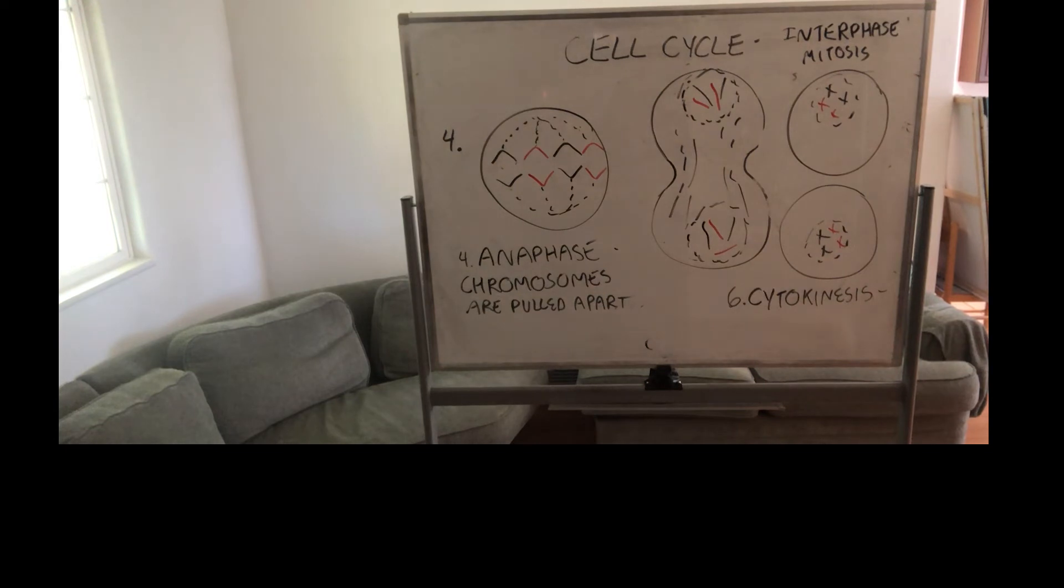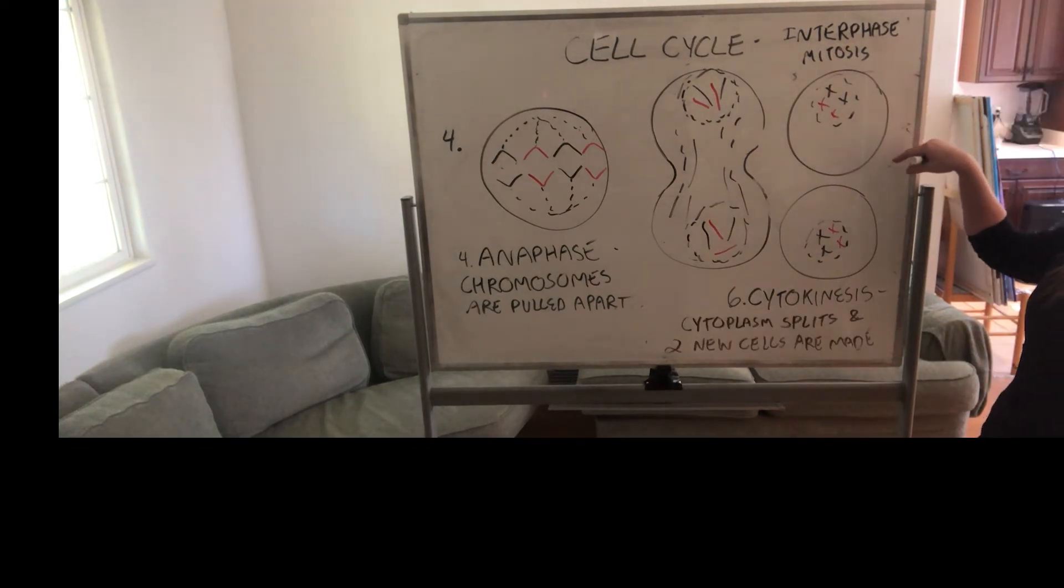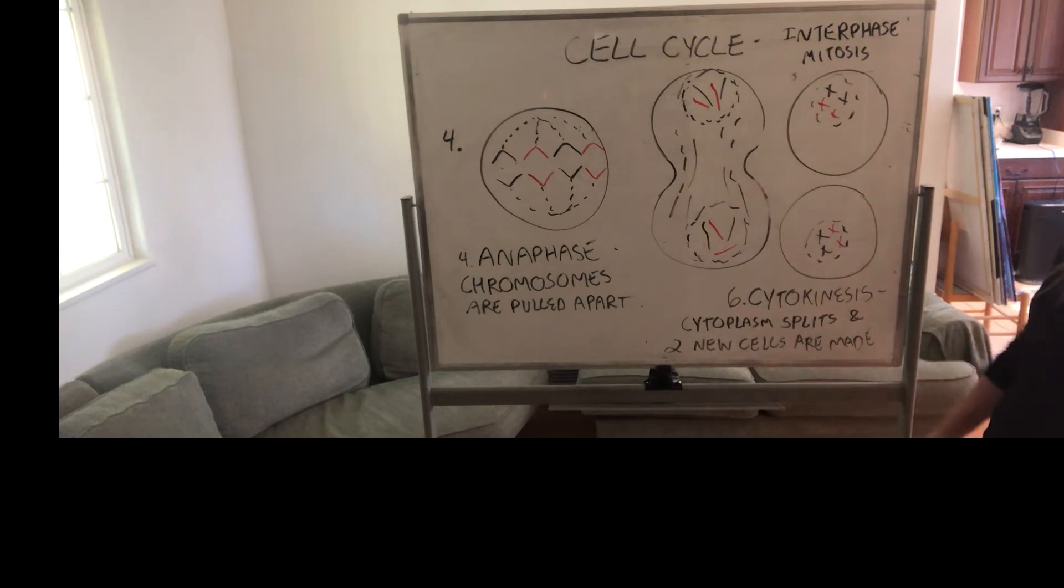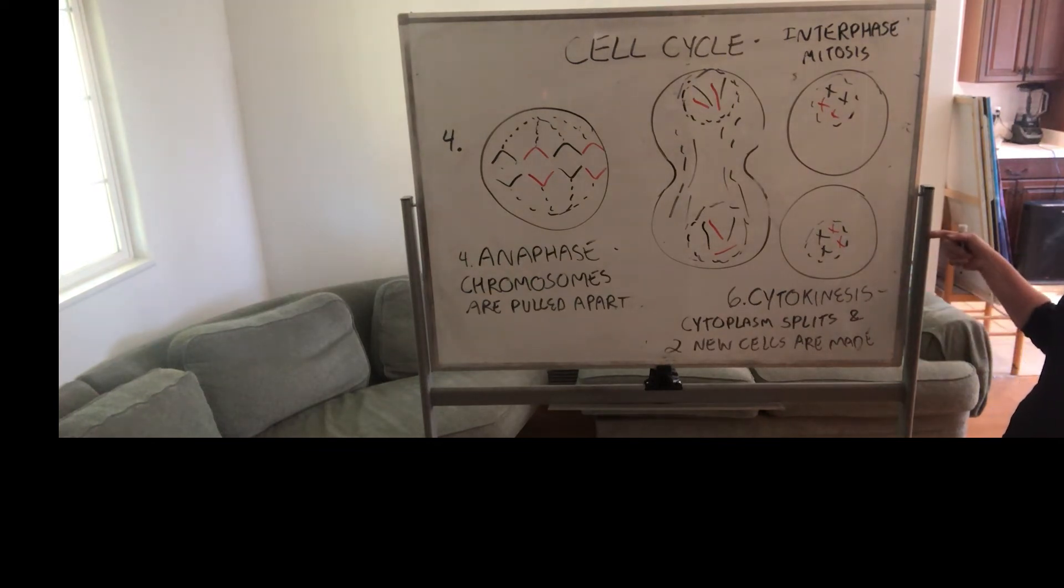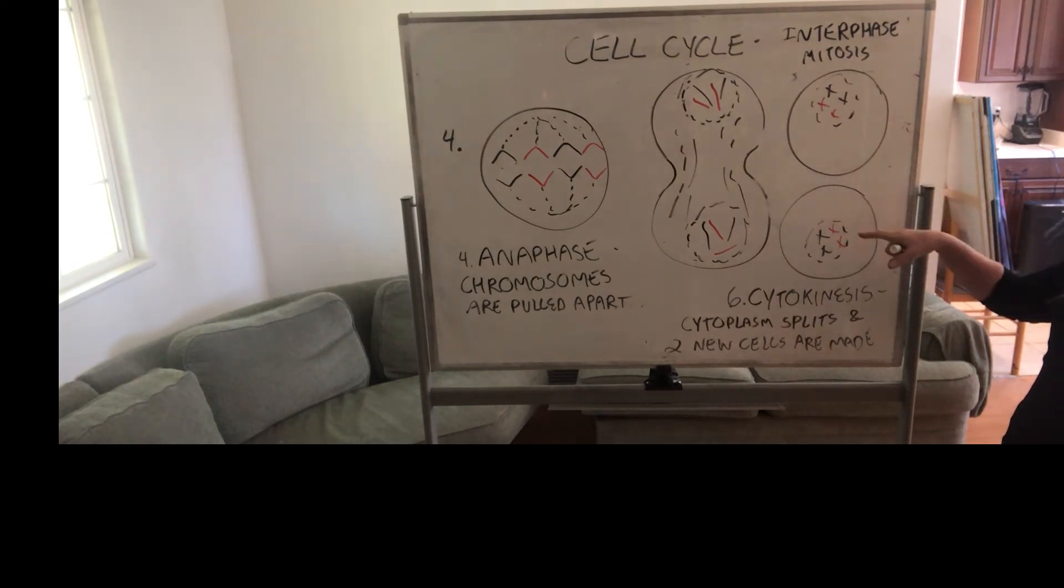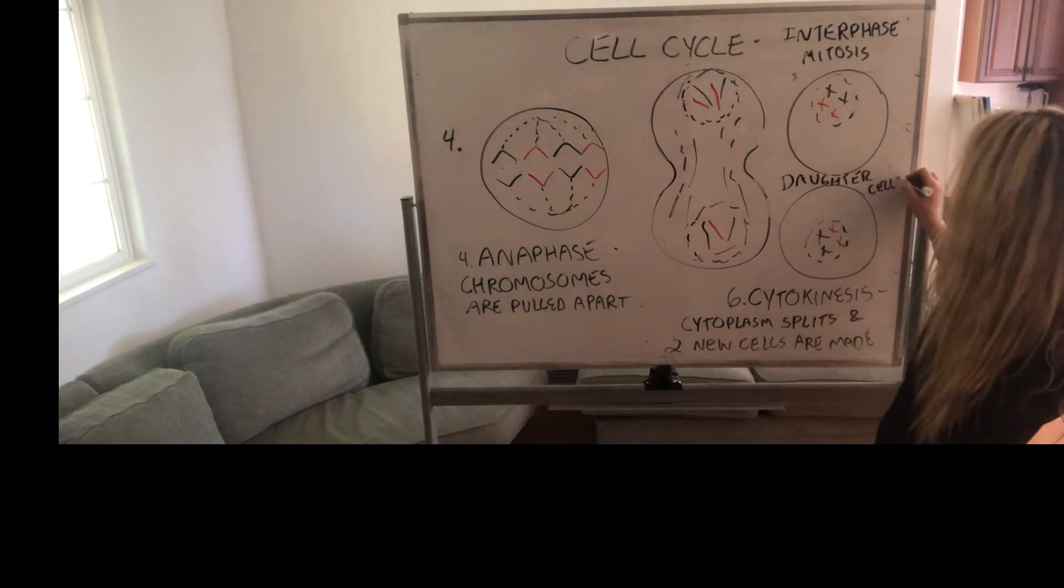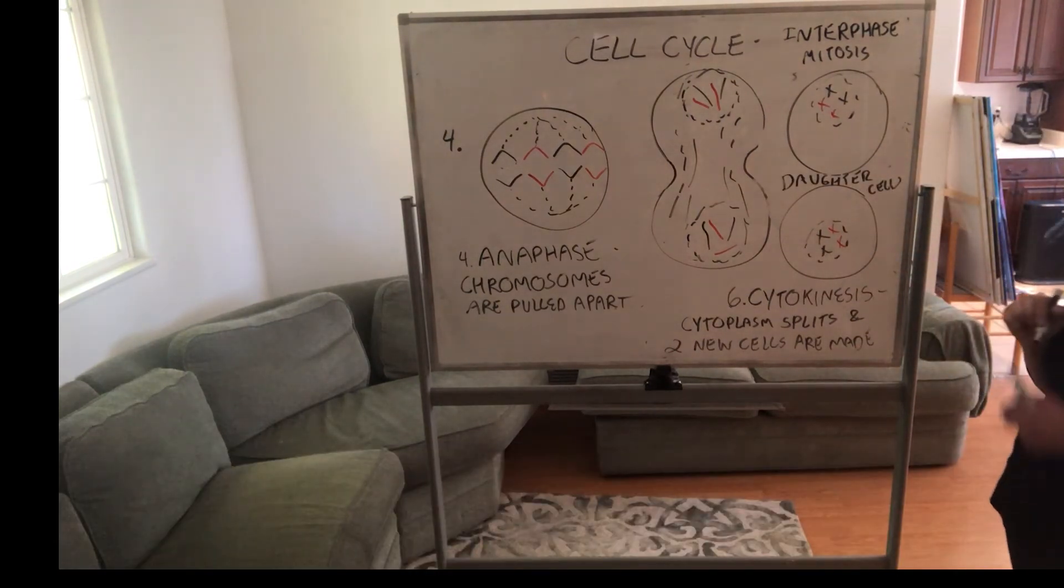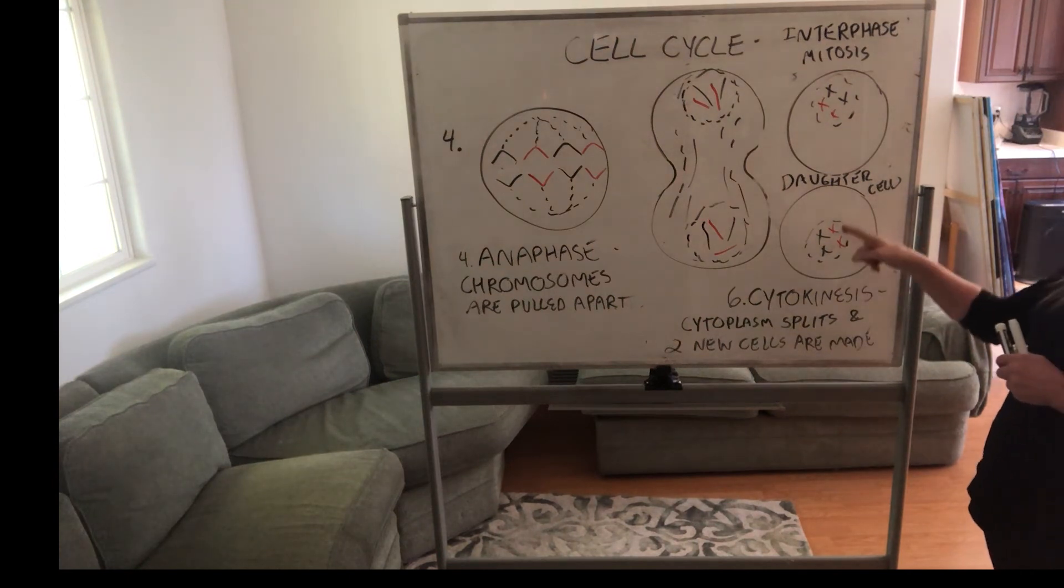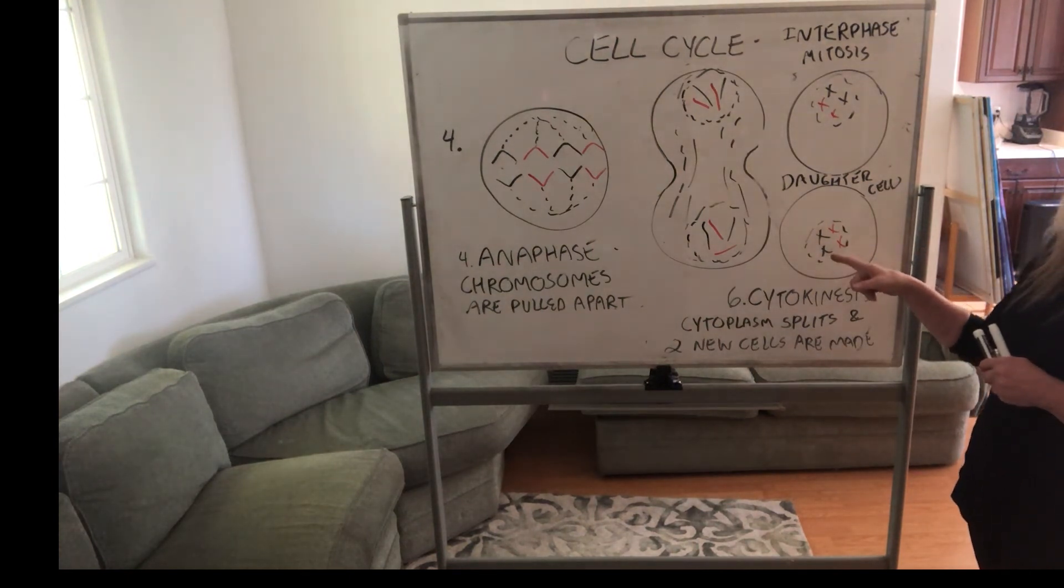The cytoplasm splits and two new cells are formed. And then after this, that DNA can replicate, and then these cells can divide. But if you notice, these cells now—these are called daughter cells, and the original is a parent cell. And if we go back to looking at the parent cell, it looked like one of these. So this is like cloning of cells.